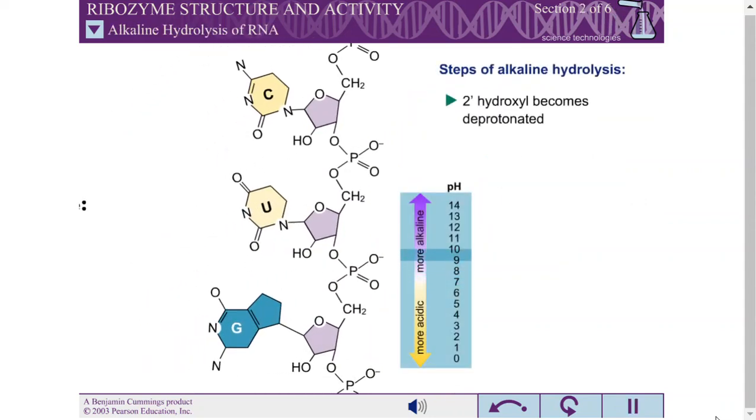Under alkaline conditions, the 2' hydroxyl of the ribose in the RNA backbone can become deprotonated, resulting in a negatively charged oxyanion.